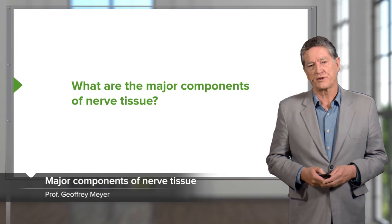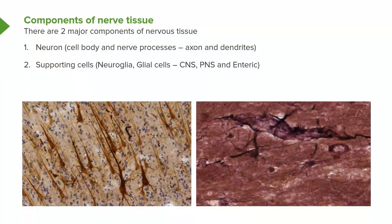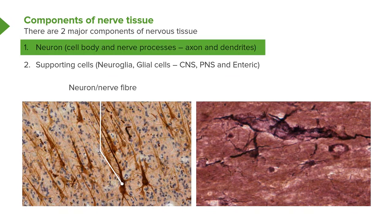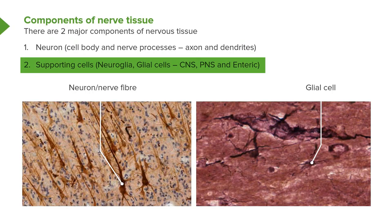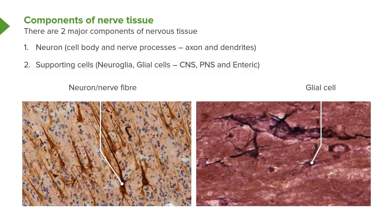Let's look at what the major components of nerve tissue are. On this slide, you can see two images, both containing the two major components of nerve tissue. One is the neuron or the nerve fibre — it's often called a nerve fibre because the axonal processes are very, very long. So when I use the term neuron, nerve fibre, or nerve cell, I'm referring to the same structure. As well as having neurons, throughout the nervous tissue there are supporting cells called glial cells, and there are a number of different sorts of glial cells.